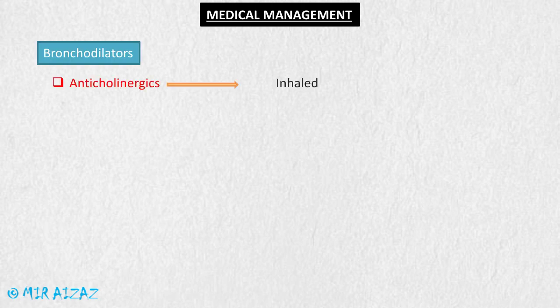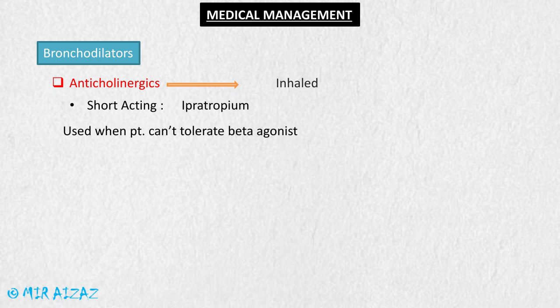The next class of bronchodilators are anticholinergics, also taken in inhaled form. The short-acting anticholinergic includes ipratropium, used in patients who cannot tolerate beta agonists as an alternative. The long-acting anticholinergic includes tiotropium.